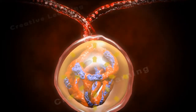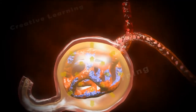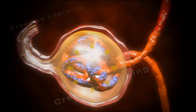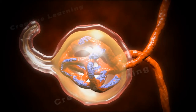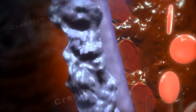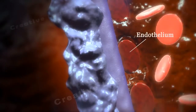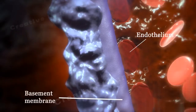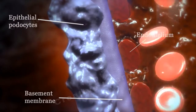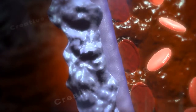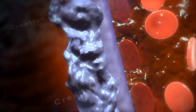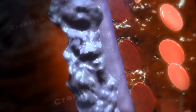As blood travels through the capillaries of the glomerulus, filtration causes a lot of plasma contents to spill out into Bowman's space through the glomerular filtration membrane. It consists of three layers: the capillary endothelium, the basement membrane, and epithelial podocytes. This membrane allows some particles of blood to pass through but not all. The fluid filtered from the capillary blood into Bowman's space is called filtrate and forms the primary urine.